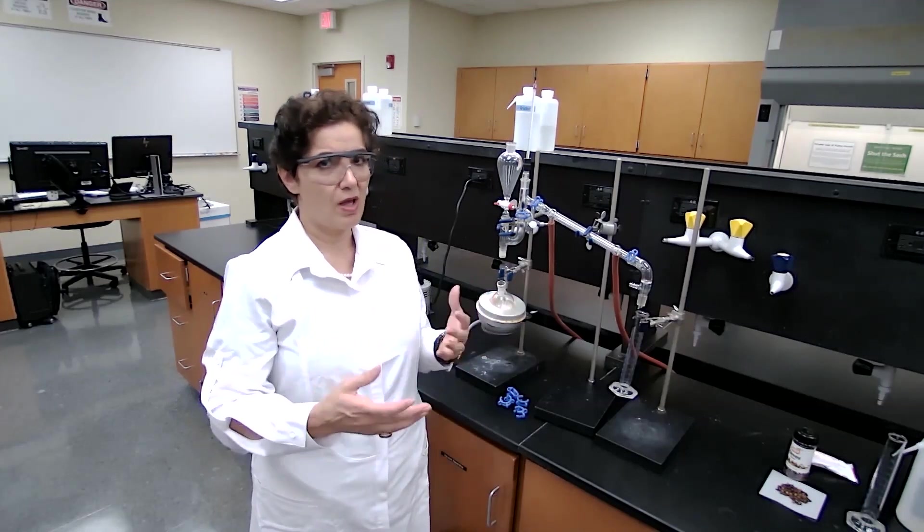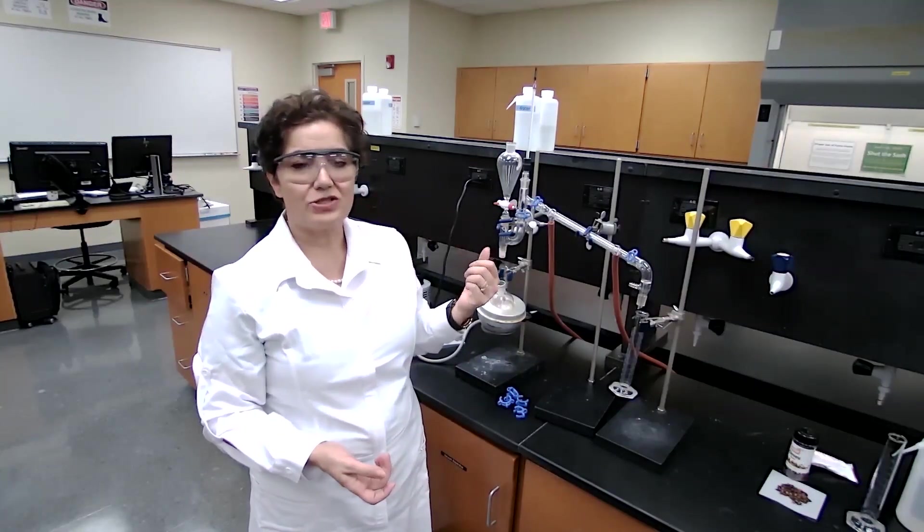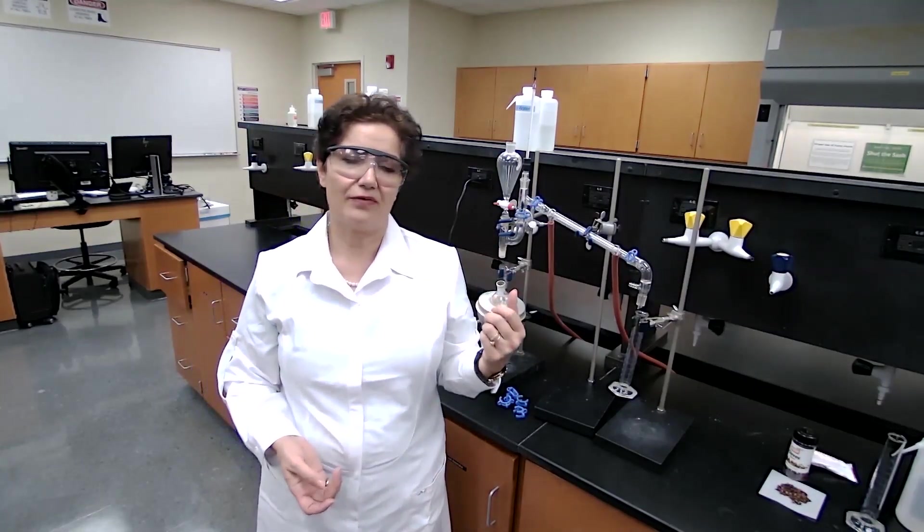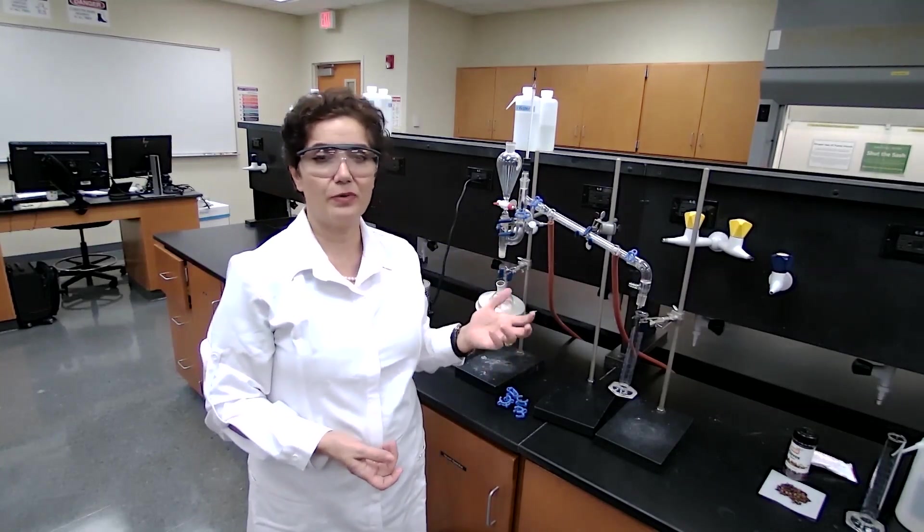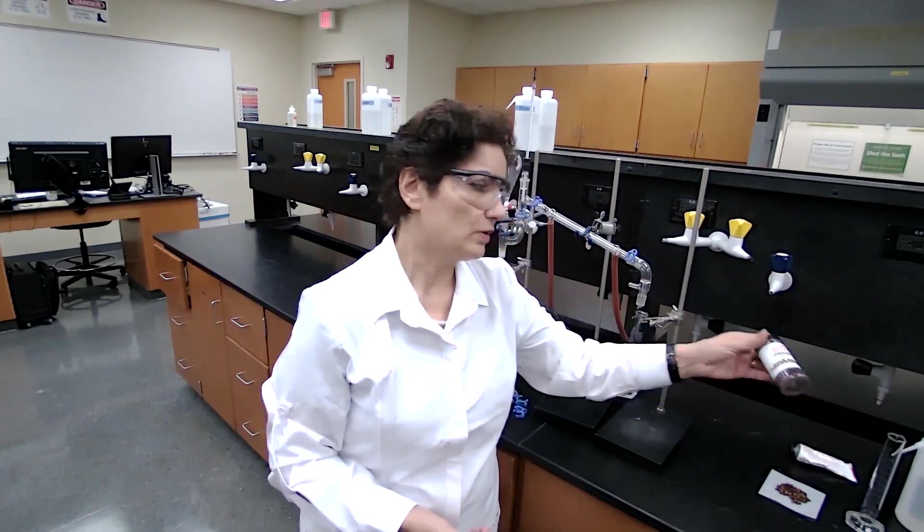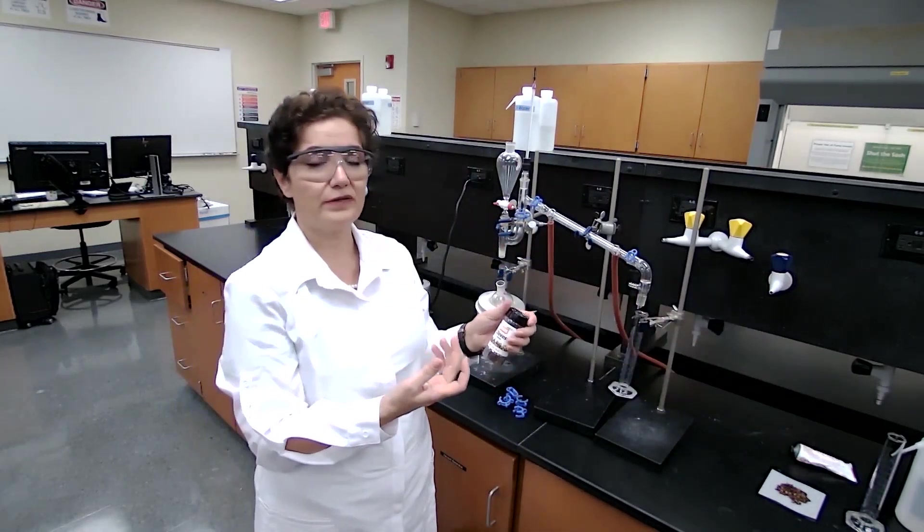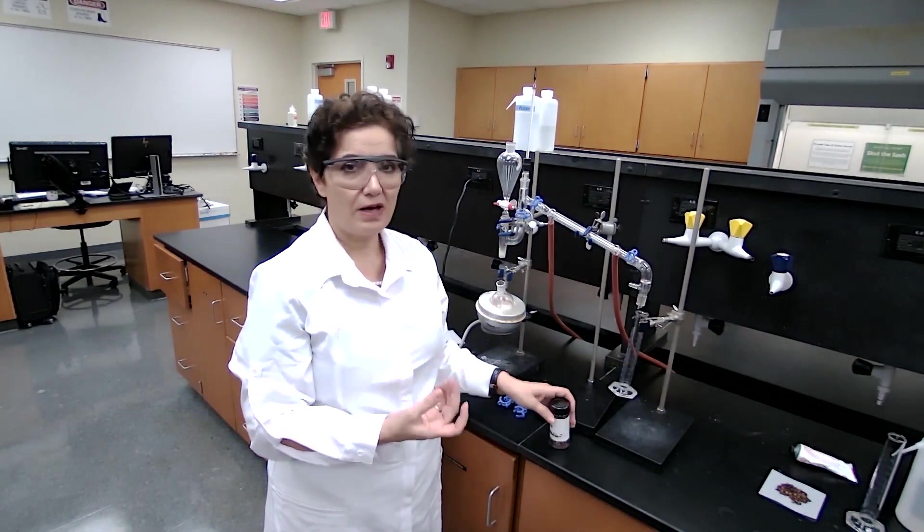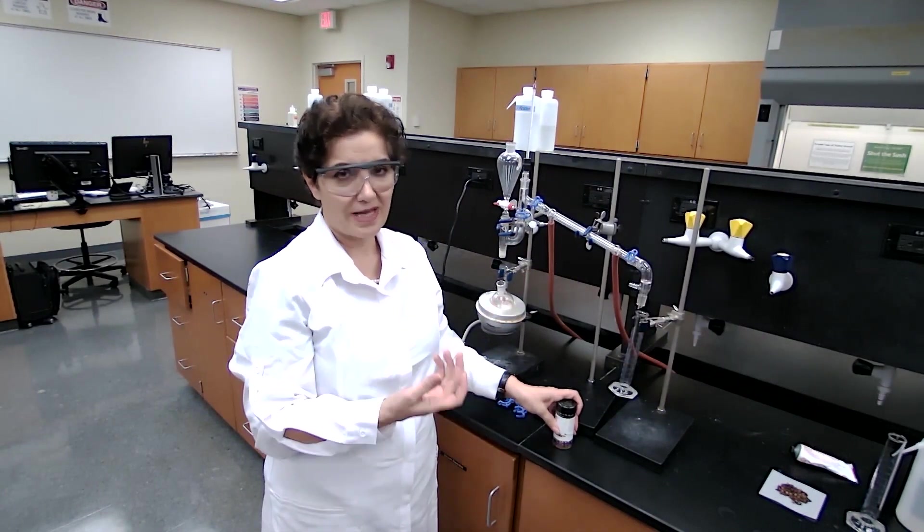A steam distillation is used when we have organic compounds that have high boiling point, like the eugenol from clove has higher than 200 degree boiling point. We cannot use that high of a temperature because it will decompose the compound.